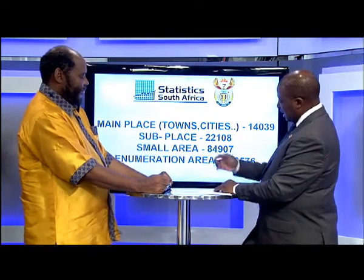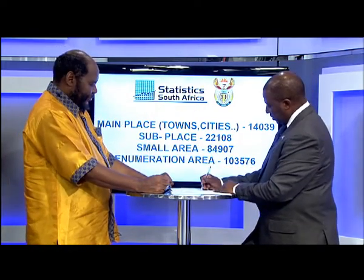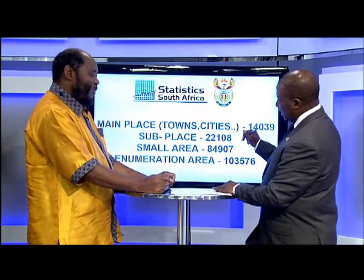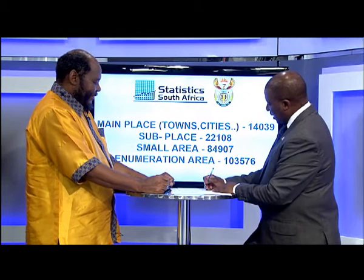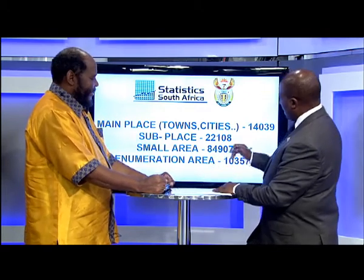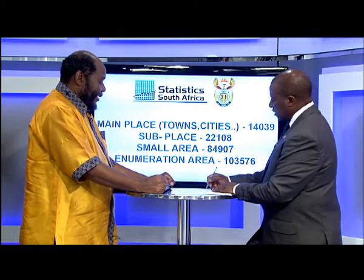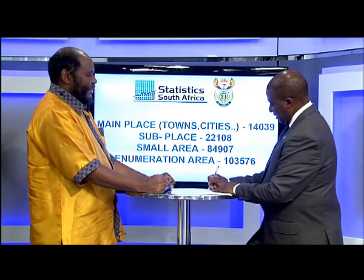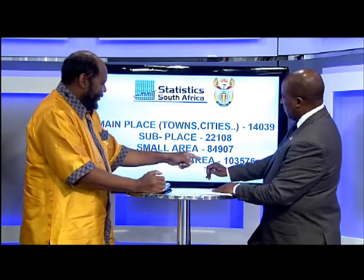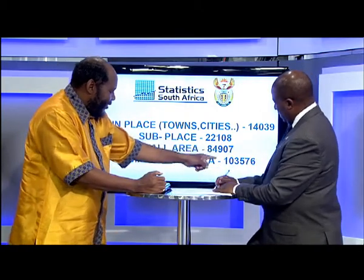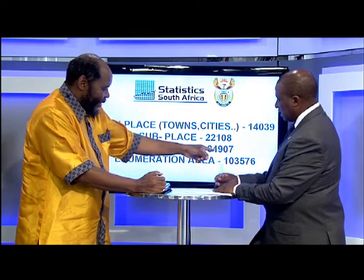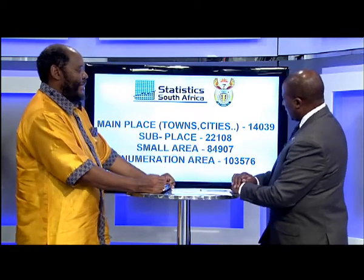So if you're in Soweto, Soweto would be a main place. And then a sub-place would be Pimville, Rockville, all those other areas. And then a small area is Zone 1, Pimville. And then under Zone 1, there might be an enumeration area — Zone 1 would be part of that 84,907.